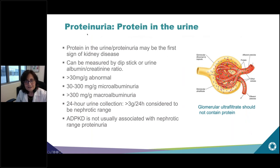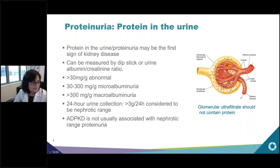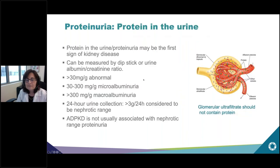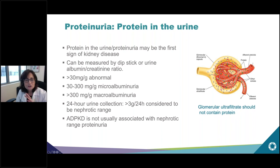What we don't want to see in the urine is protein. Protein in the urine — also called proteinuria — may be the first sign of kidney disease. It can be measured on a dipstick. You can also measure the albumin in the urine. The glomerulus, the filtering unit of the kidney, should keep protein in the blood and not allow it into the urine. If protein starts to leak out, that means there is a problem in the kidney.